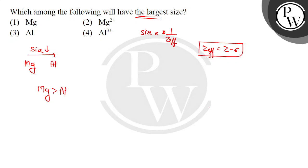Mg will be more than aluminum. So let's cut down aluminum and aluminum 3 plus.